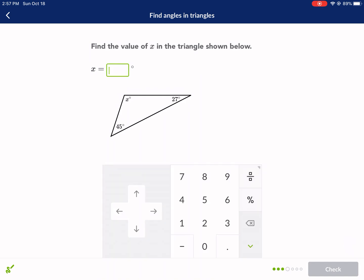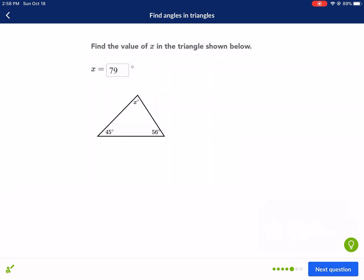Boy, I almost feel bad for assigning this. 180 minus 56 minus 45 equals 79. At least you can feel confident knowing that you're getting all these right. Minus 23 minus 124 from 180, I get 33.